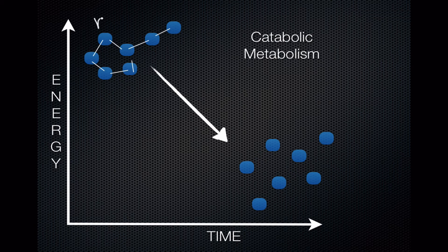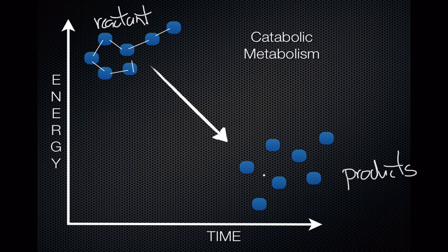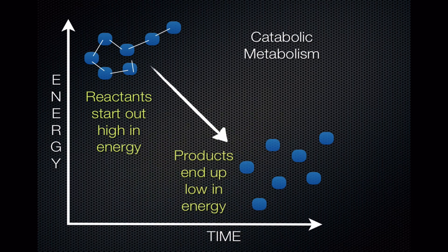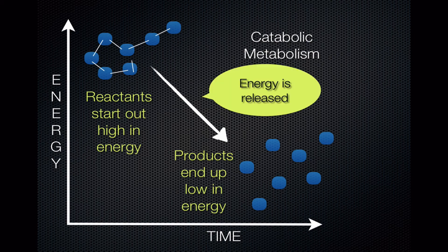We start with a reactant that's large and made up of many different atoms held together by bonds, and we're going to break those bonds and produce products. Notice that the products are lower in energy — we've gone downhill. Energy can't be created or destroyed, so the energy has to go somewhere; it's released into the system or environment where this reaction happens. Some of that energy is going to be converted to ATP, which is important. This is why we have to take in calories or food calories and digest them, break them apart to get some of that energy into ATP molecules, which our cells can use to do work.